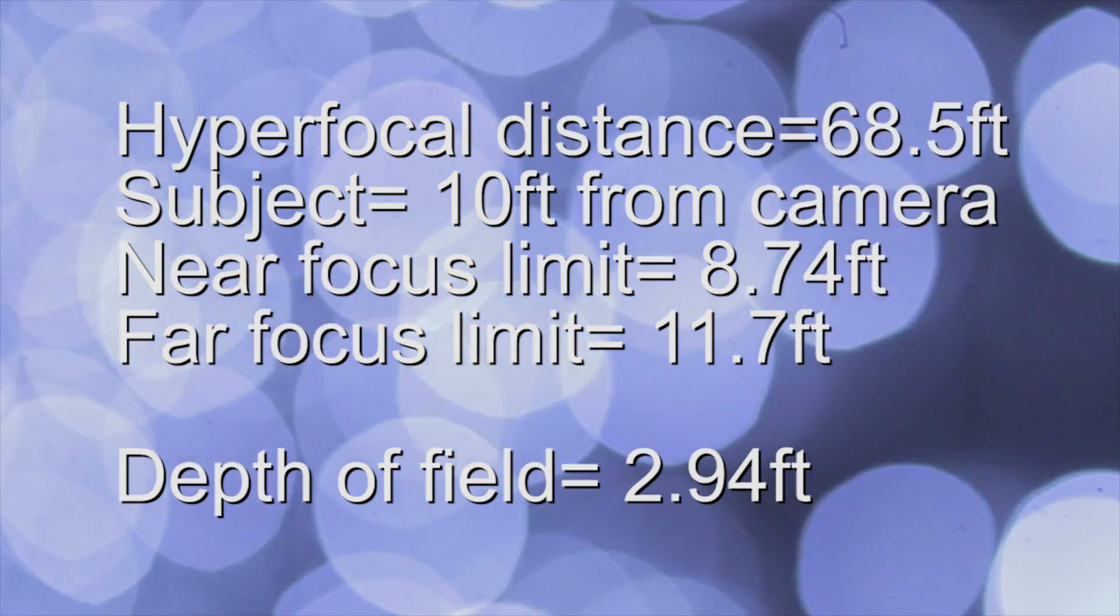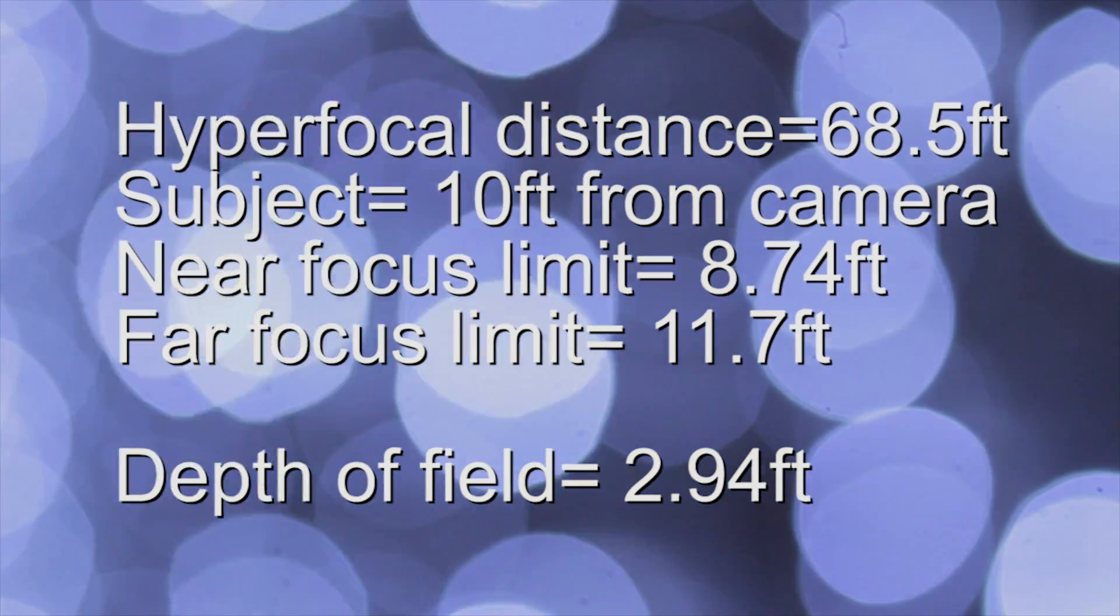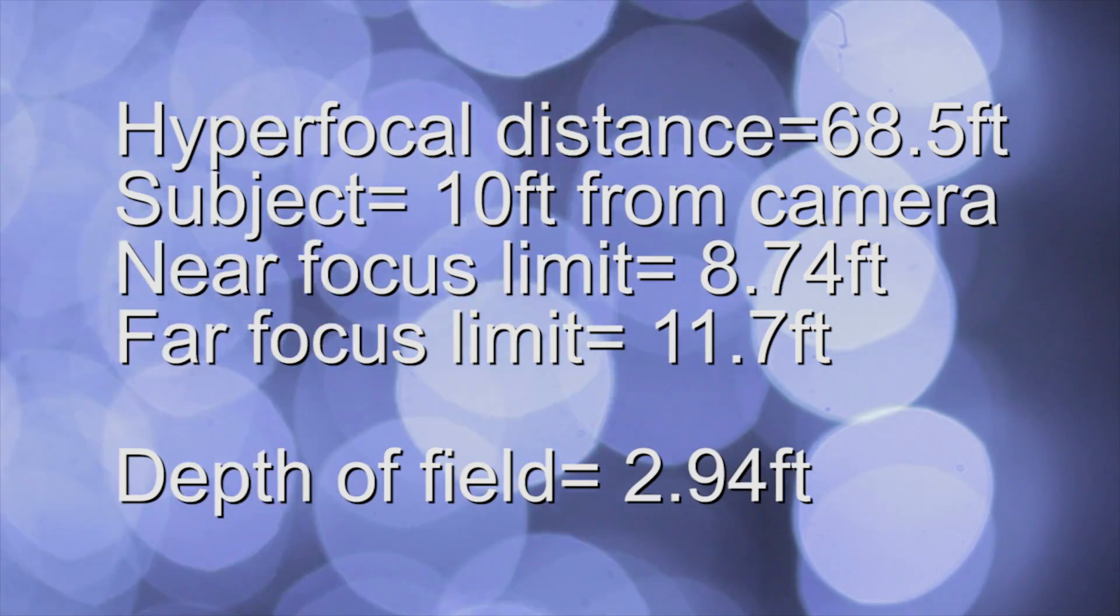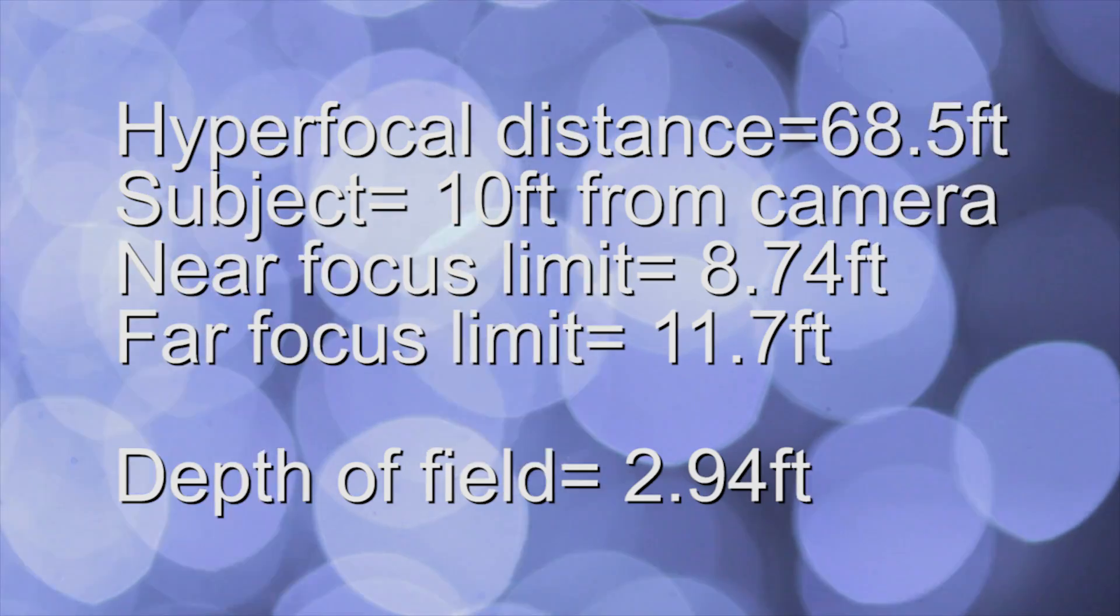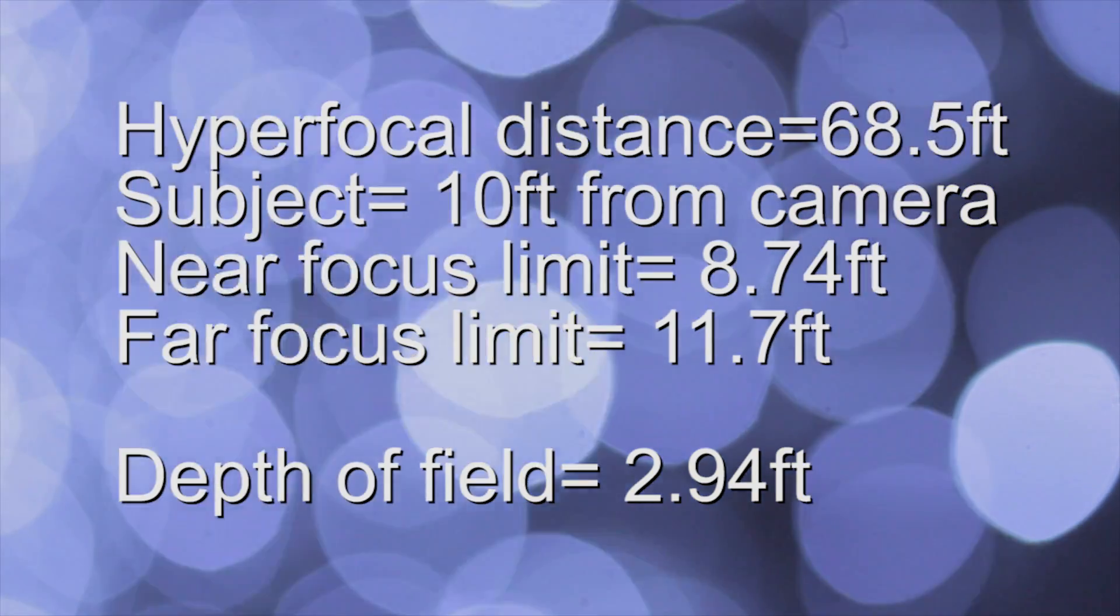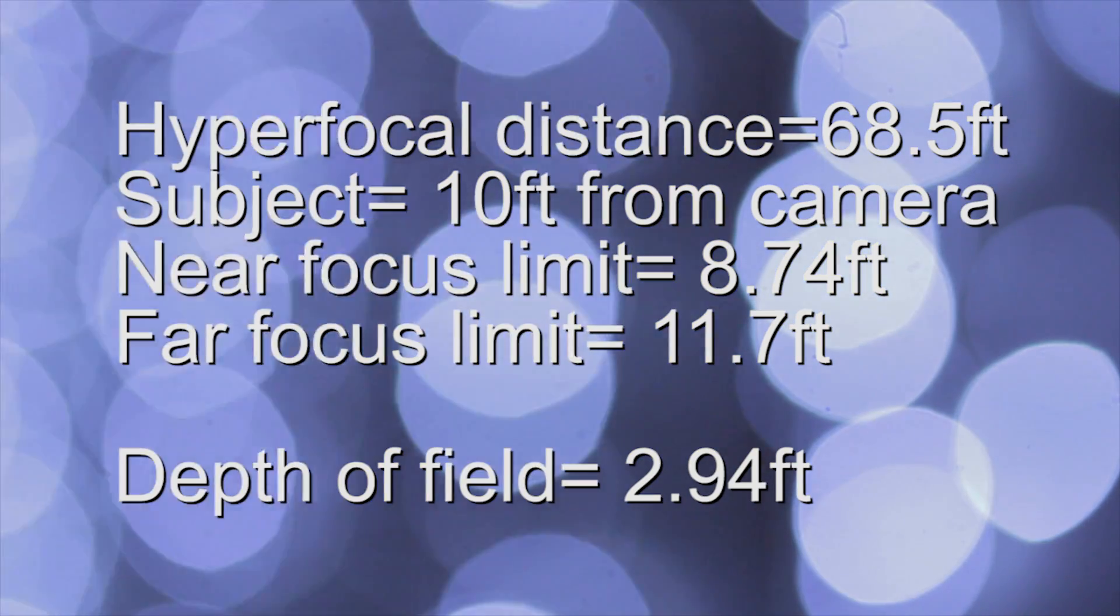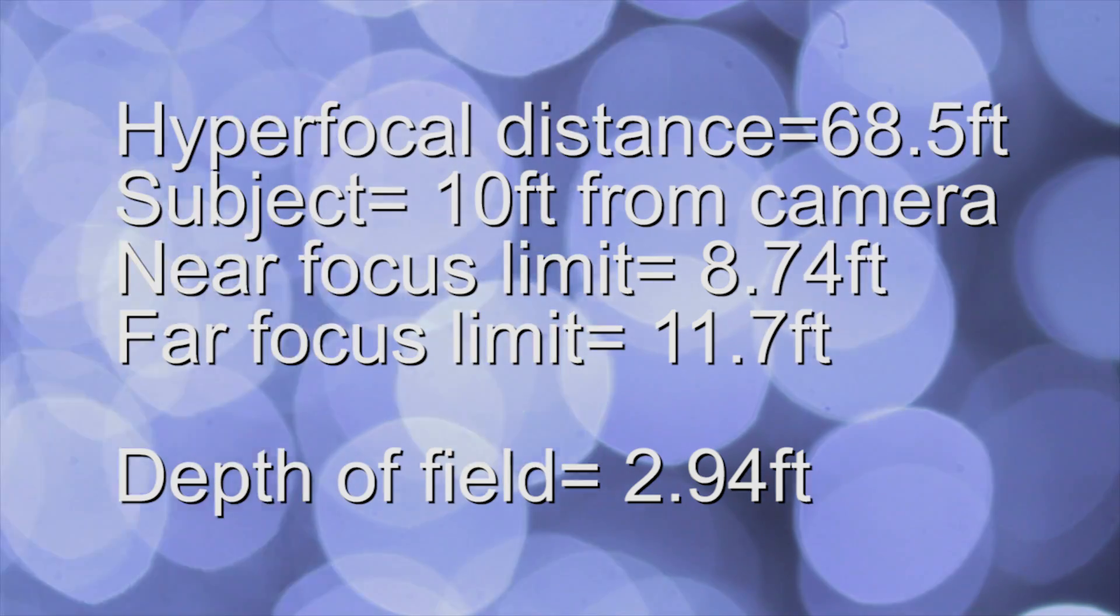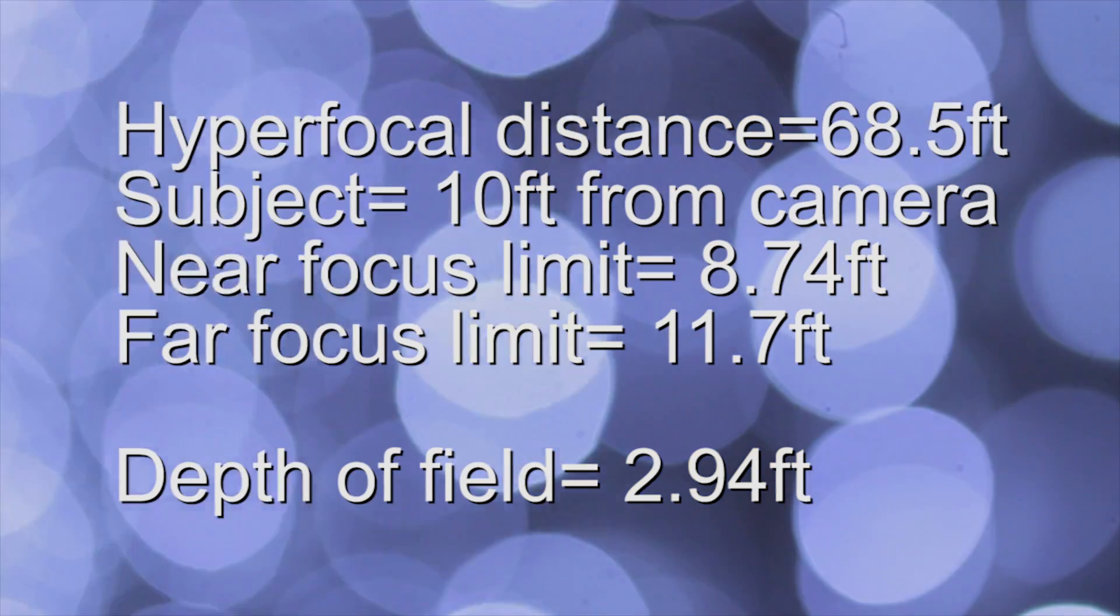Now that we've solved for our hyperfocal distance, we can plug that into our other two equations to calculate our near and our far limit of acceptable focus. After we do that, we'll end up with our near focus being 8.74 feet, our far focus limit being 11.7 feet. Which means, by subtracting the two, we'll have a total depth of field of 2.94 feet.